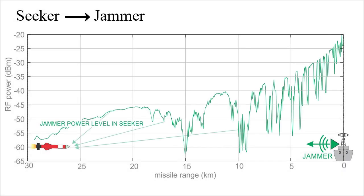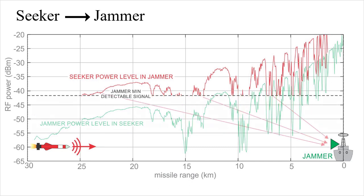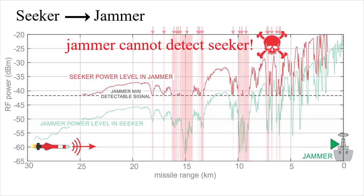Looking in the reverse direction from the seeker to the jammer, the same thing can happen. Multipath can cause the seeker to disappear as seen by the jammer. This is important because in order for the jammer to jam the seeker, it has to detect the seeker's RF signals, and multipath can cause them to disappear.